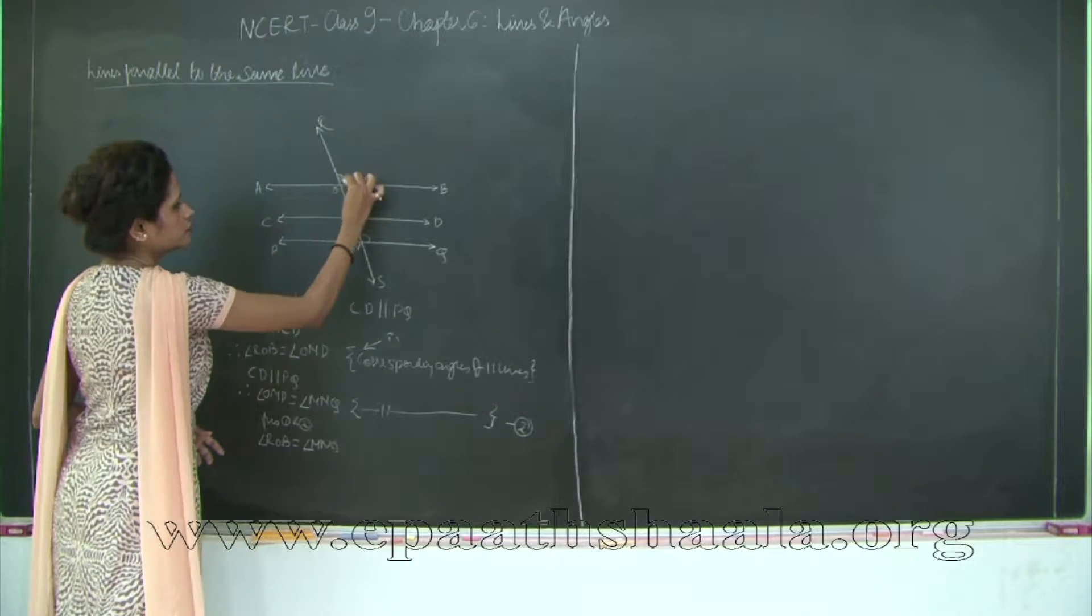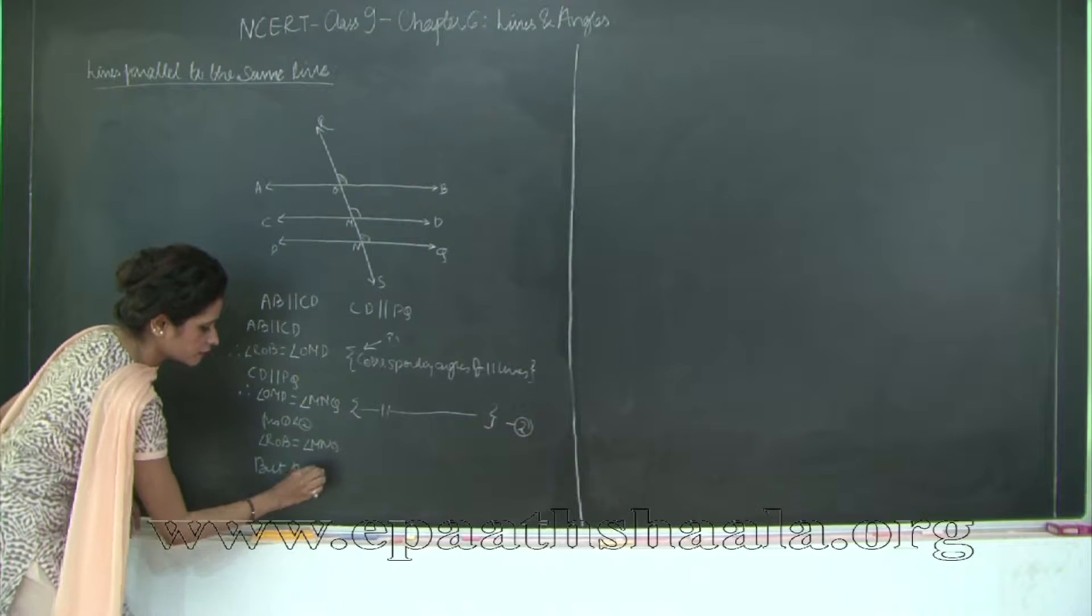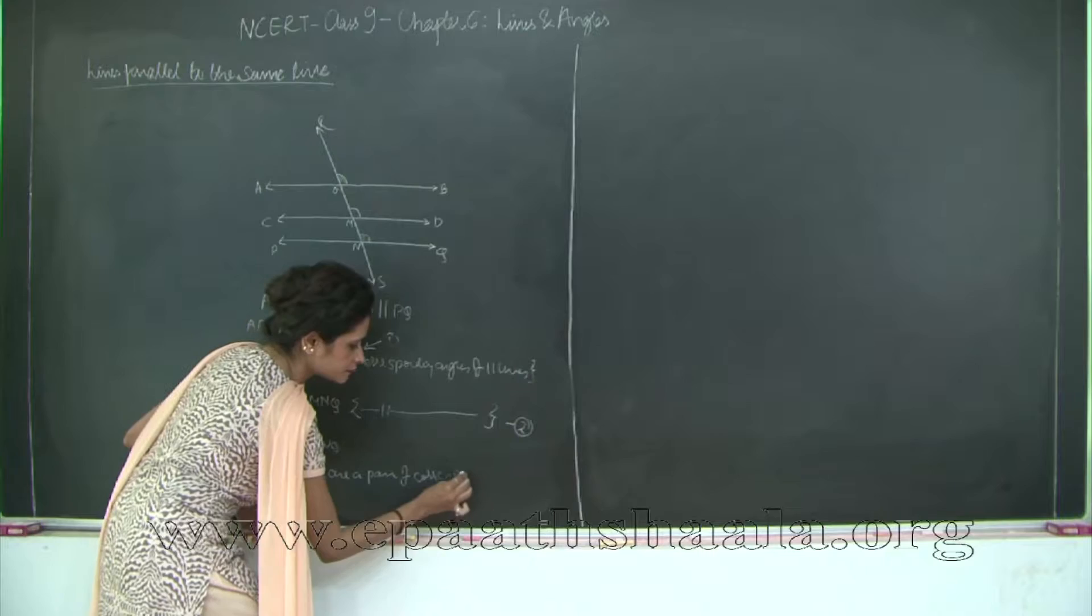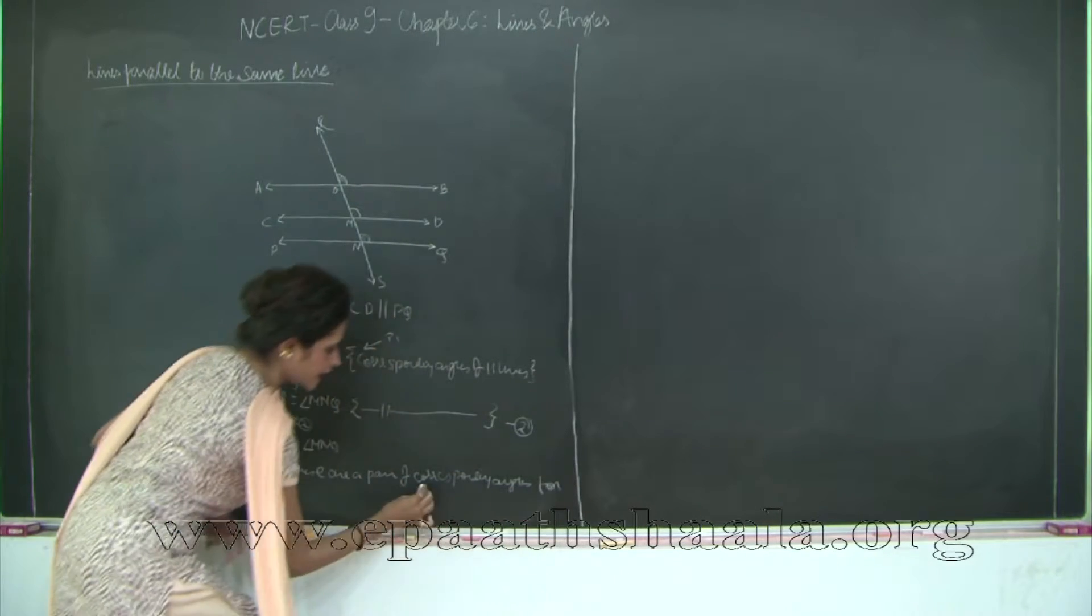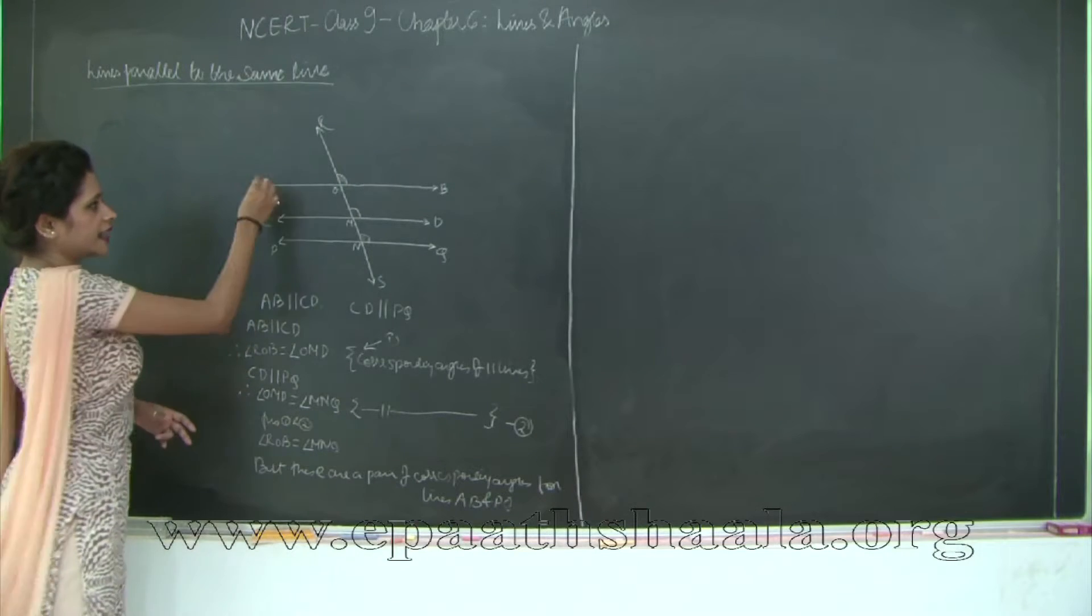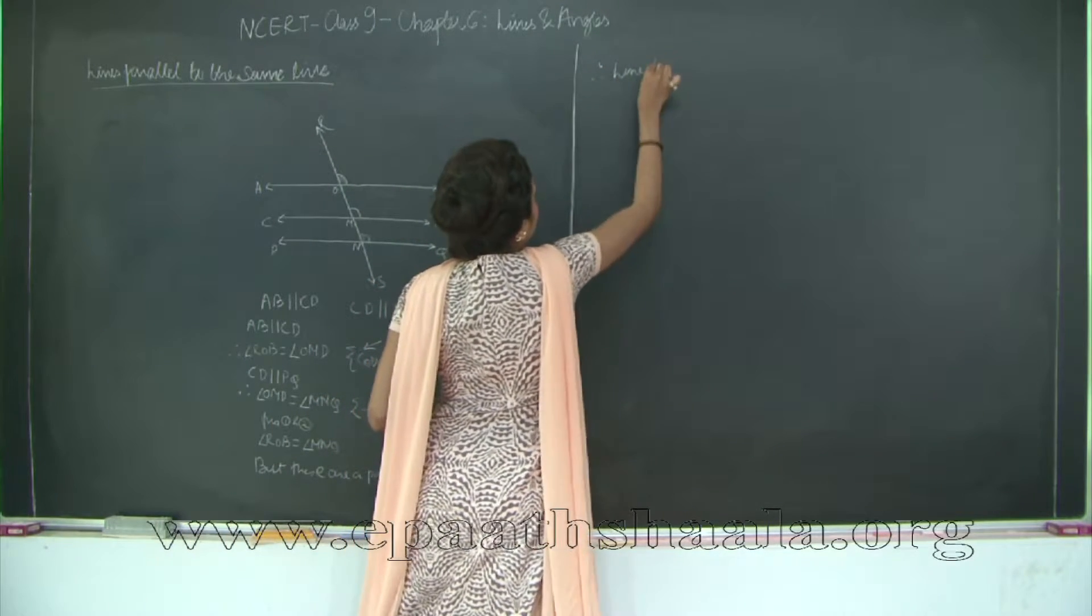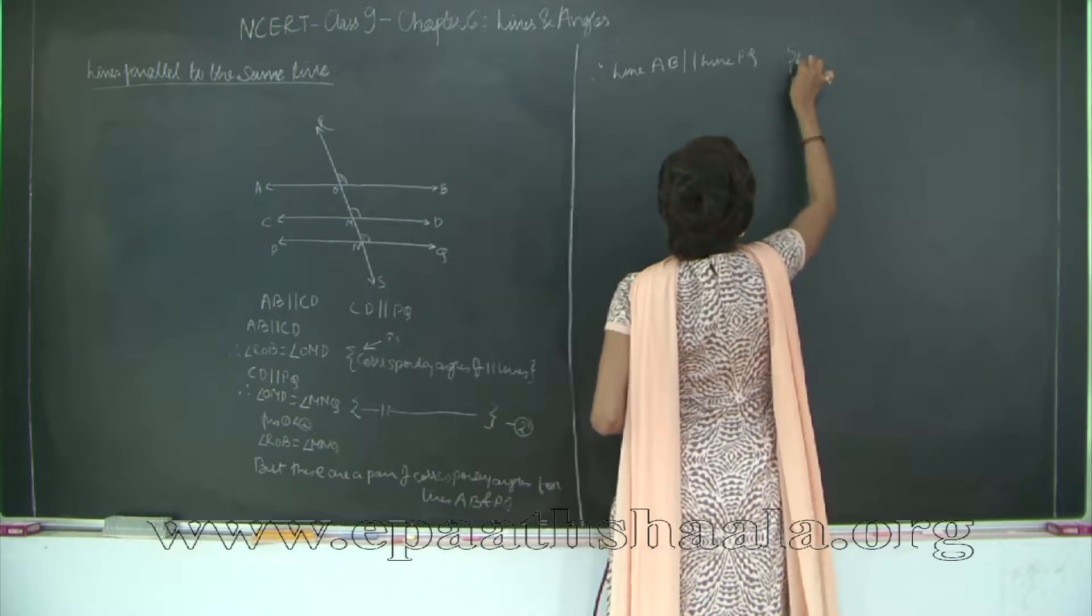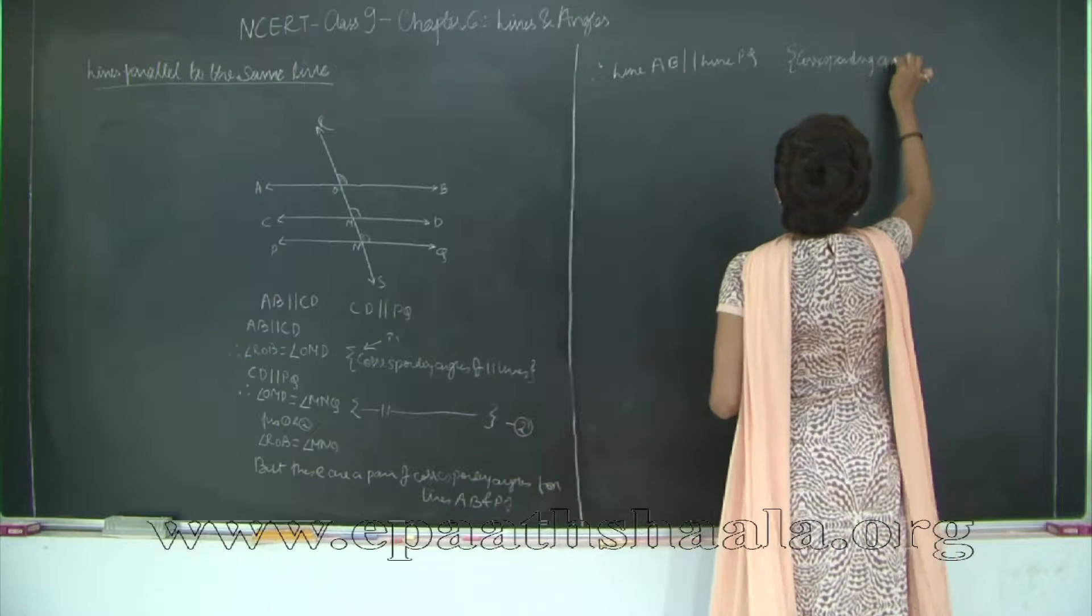So where is my ROB? This is my ROB and my MNQ is this. But these are a pair of corresponding angles for lines AB and PQ. Therefore, by corresponding angle axiom, line AB is parallel to line PQ. Therefore, line AB is parallel to line PQ. In brackets, corresponding angle axiom.